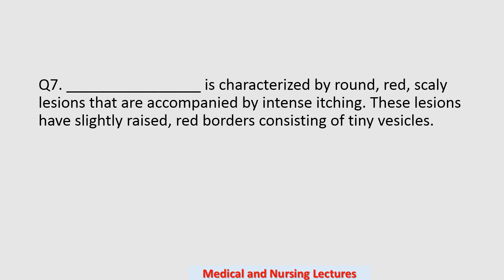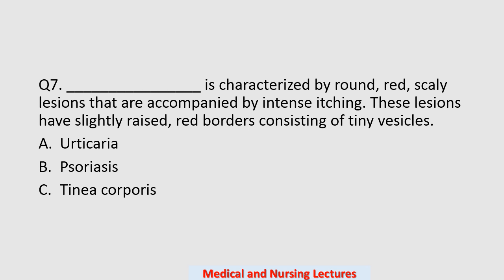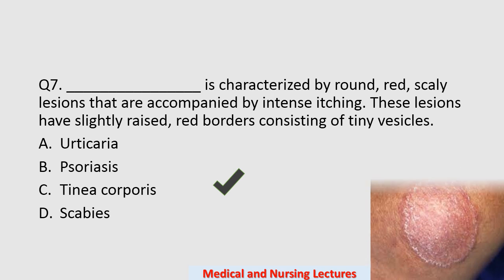Question number seven: this is characterized by round red scaly lesions accompanied by intense itching. These lesions have slightly raised red borders consisting of tiny vesicles. Options are urticaria, psoriasis, tinea corporis, or scabies. The correct option is tinea corporis. You can see the borders of this kind of lesion.